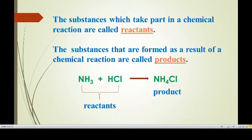For example, ammonia reacts with hydrogen chloride to produce ammonium chloride. Here, ammonia and hydrogen chloride are the reactants — they react and produce a new substance. The product is ammonium chloride.